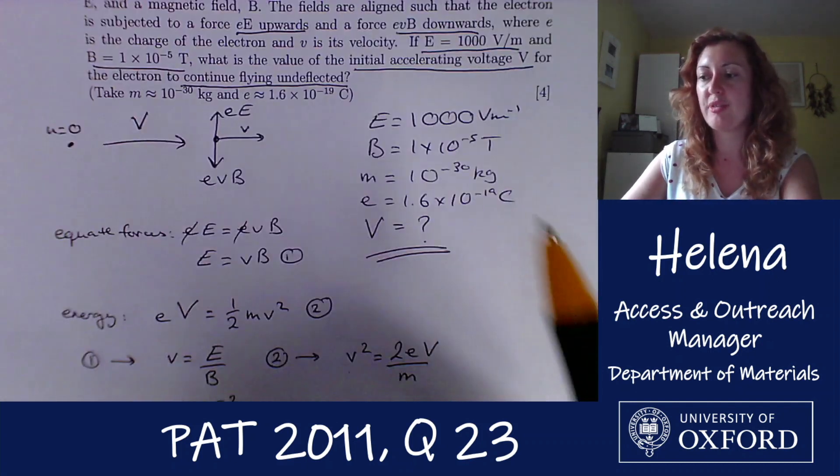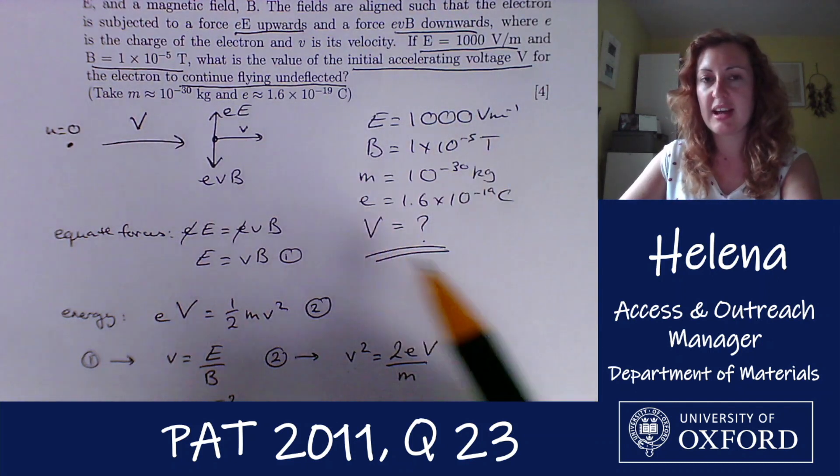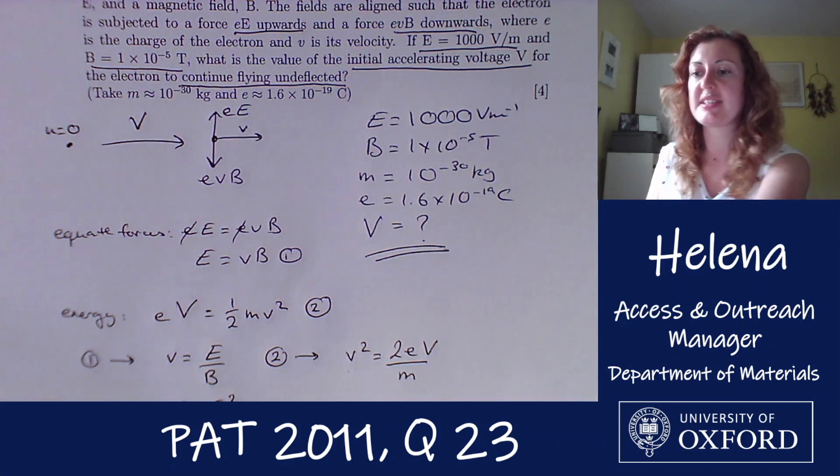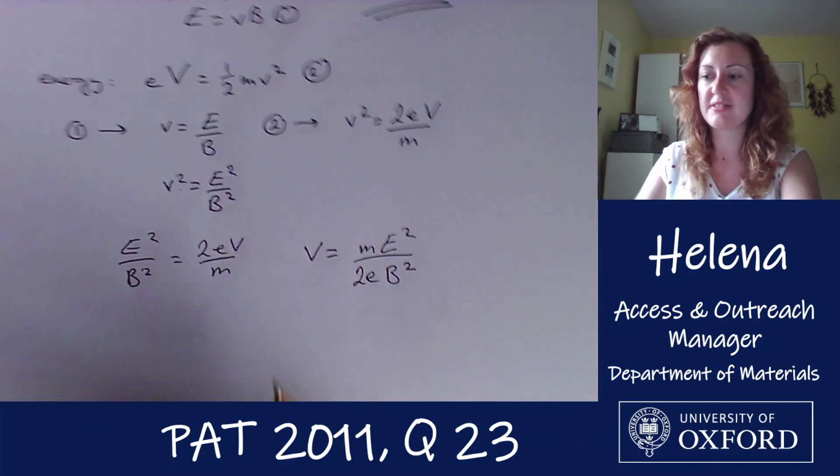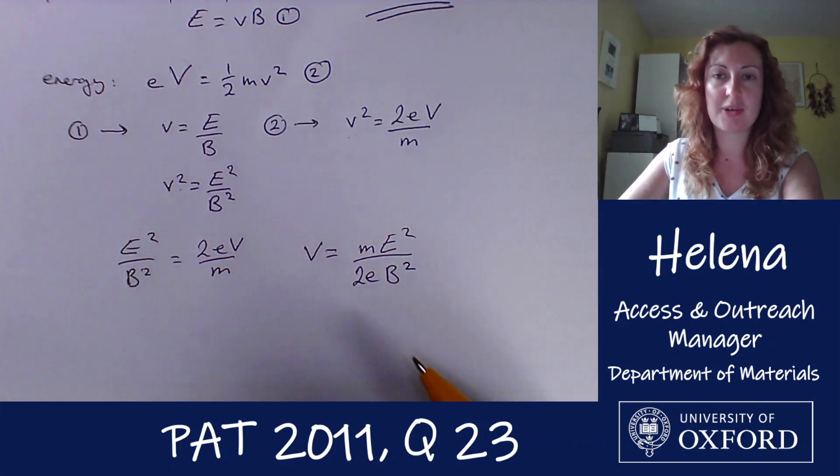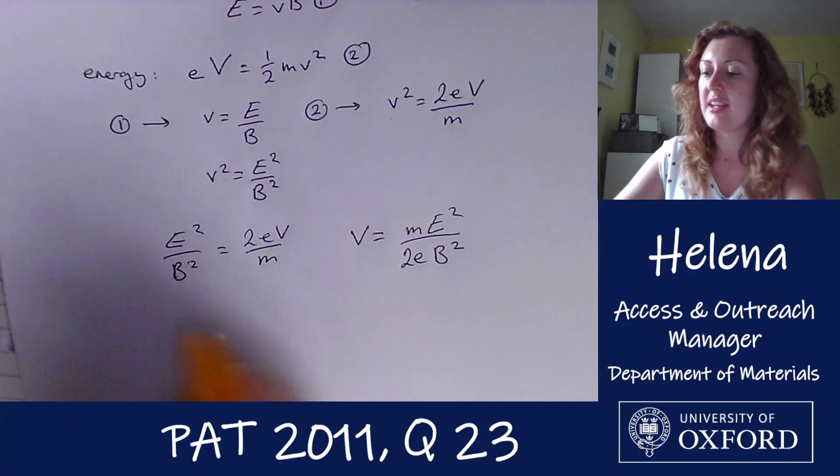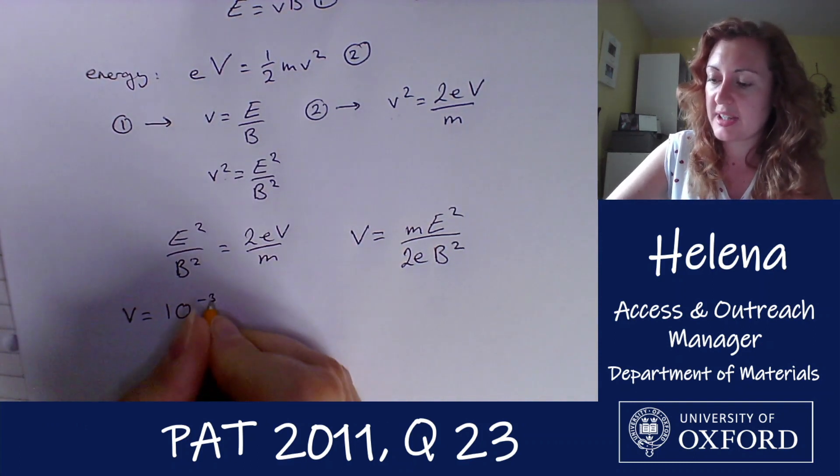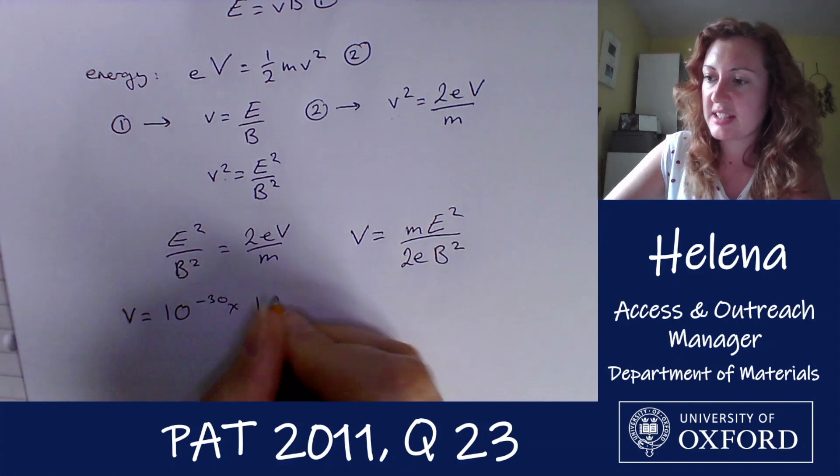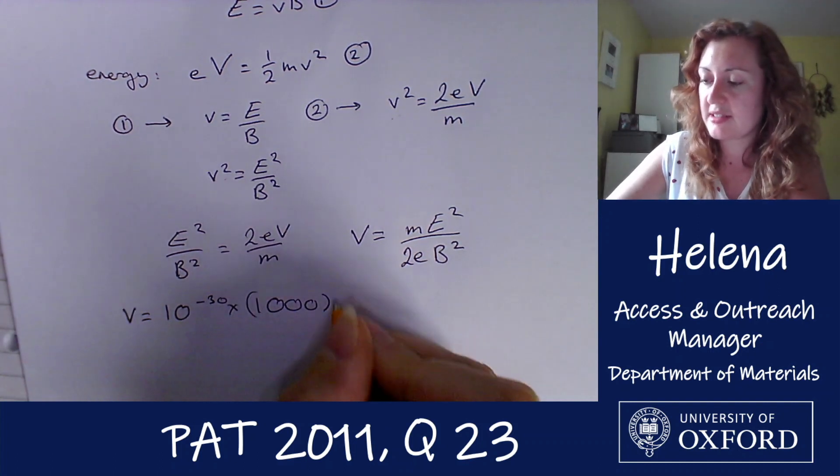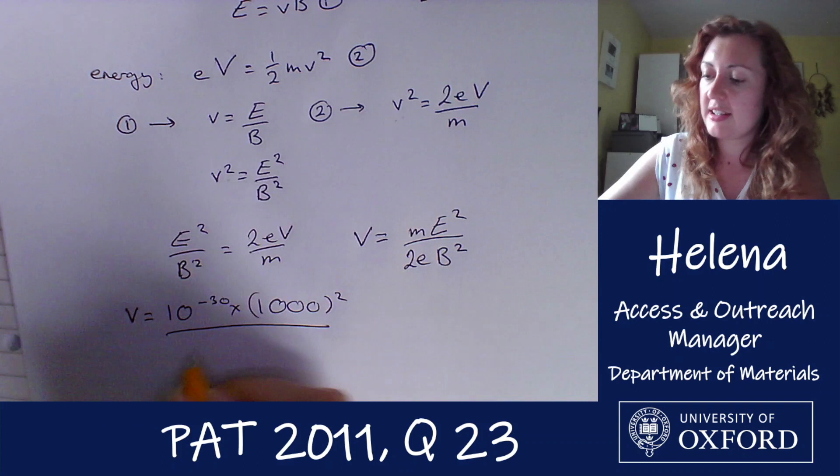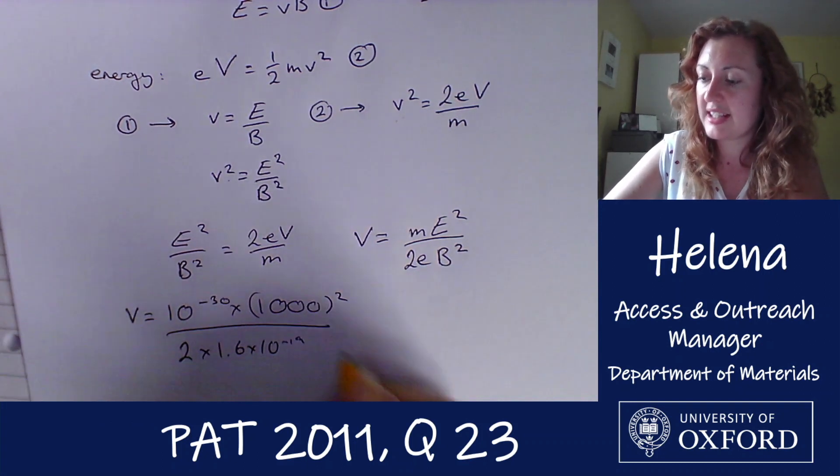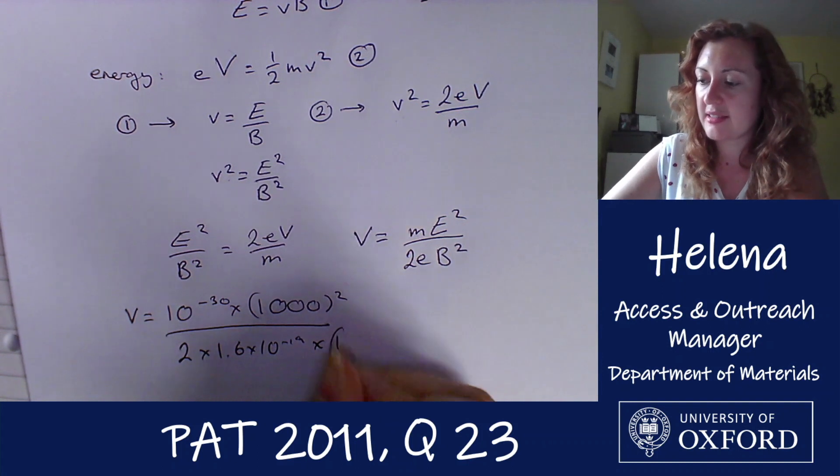And we have all of the numbers for this up here, and we know that all of these are in SI units. So if I put them into this equation, the units should work out. You could check this, but I'm not going to do it just for time here. So if we put the numbers in here, we have the mass which was 10^-30 times E² which is 1000 squared, divided by 2 times 1.6 × 10^-19 times B squared.